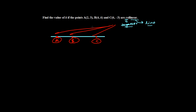We need to find the value of k. Since A, B, C are collinear — A is (2,3), B is (4,k), and C is (6,-3) — think about this: if the points are collinear, will they form a triangle? If they cannot form a triangle, what would the area of the triangle be? The area of the triangle will be zero. Just like if I have no apples I say I have zero apples — if there's no triangle formed, the area is zero.